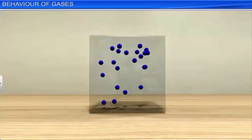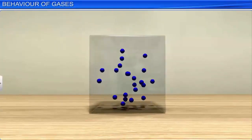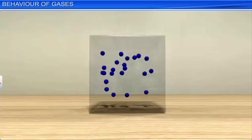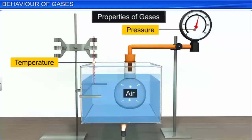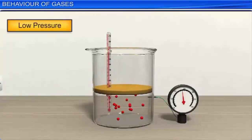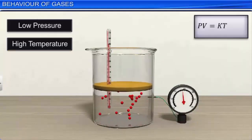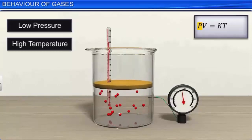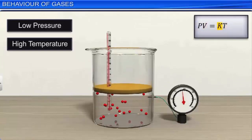In the case of gases, interaction between molecules is negligible, except during a collision, because the molecules are far away from each other. So it is easier to study properties of gases such as pressure, temperature, and volume compared to that of solids and liquids. Gases at low pressure and high temperature satisfy a simple relation: PV = KT, where P is the pressure, V is the volume, T is the temperature in Kelvin scale, and K is the proportionality constant.